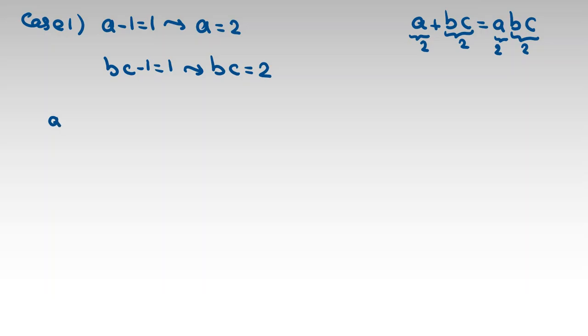Here the problem says a, b, c are between negative 10 and less than 10. We have a = 2 and bc = 2, so we can have 1 times 2, negative 1 times negative 2, 2 times 1, or negative 2 times negative 1.